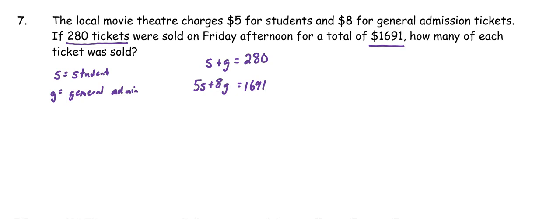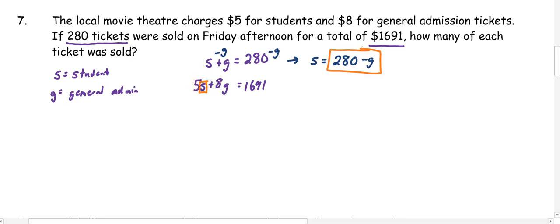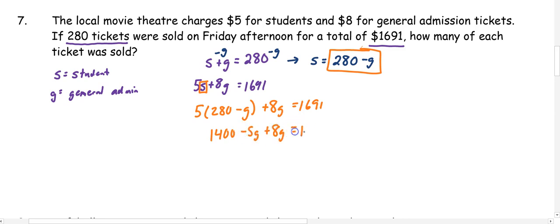Now I need to get a variable by itself. I'll subtract G from both sides to get S equals 280 minus G. I box what S is equal to and box S in the other equation, then substitute: 5 times the quantity 280 minus G, plus 8G equals 1,691. Distributing gives 1,400 minus 5G plus 8G equals 1,691. Combining like terms gives 1,400 plus 3G equals 1,691. Subtracting 1,400 from both sides gives 3G equals 291. Dividing by 3, G is 97.